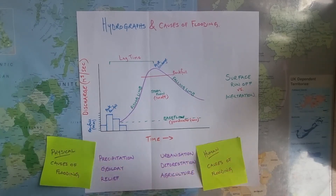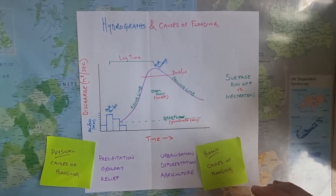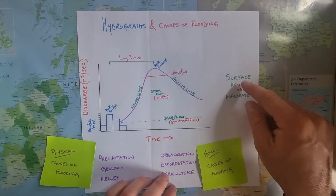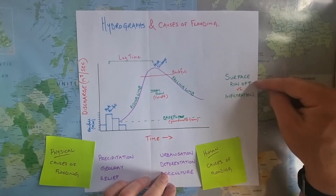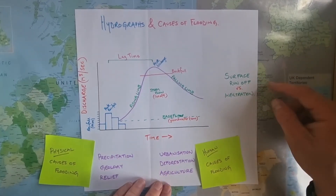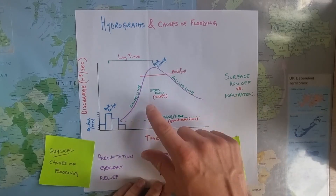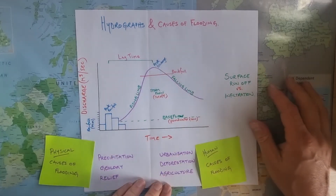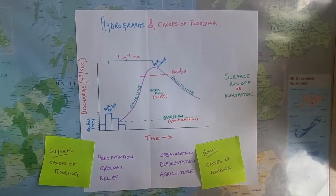All of these ideas, whether they be physical or human causes of flooding, are going to link up to the relationship between surface runoff and infiltration, which is the thing that's going to determine the shape of the river's response, and therefore determine whether or not a flood is likely to happen.